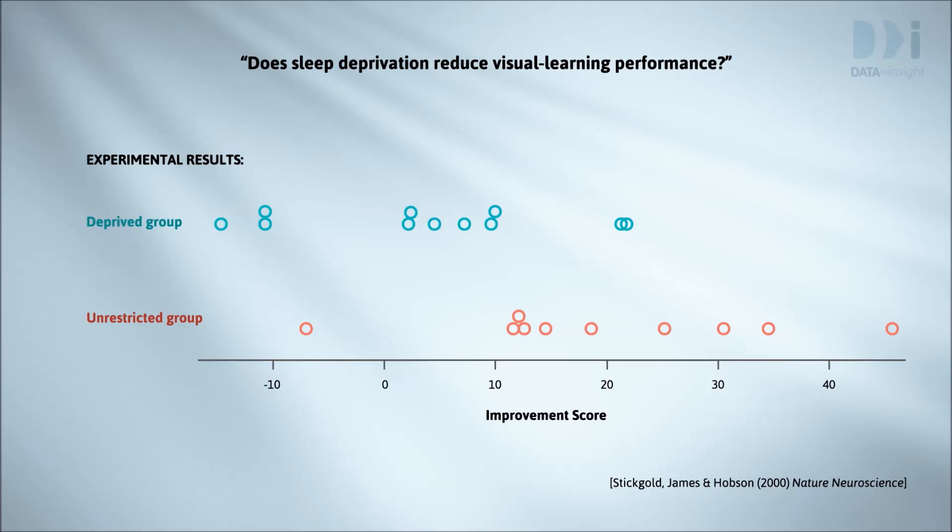This data comes from a randomized experiment to investigate the effect of sleep deprivation on performance on a visual learning task. Subjects in the group labeled Deprived experienced some sleep deprivation, while those in the group labeled Unrestricted were able to sleep normally. The outcome variable was an improvement in a score on a particular type of test of visual learning over a three day period.